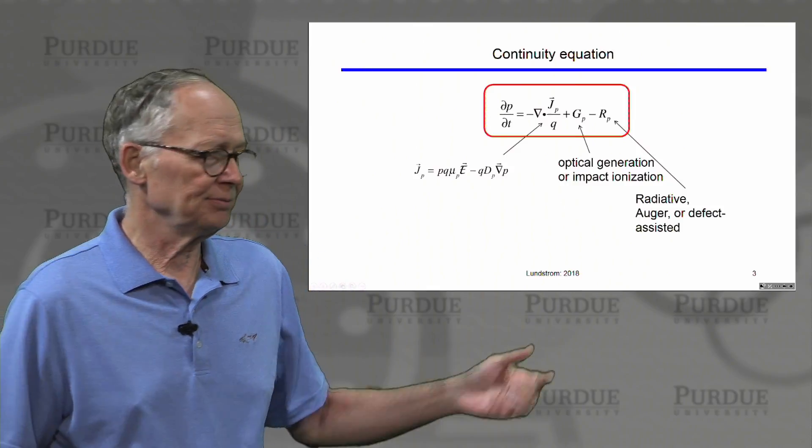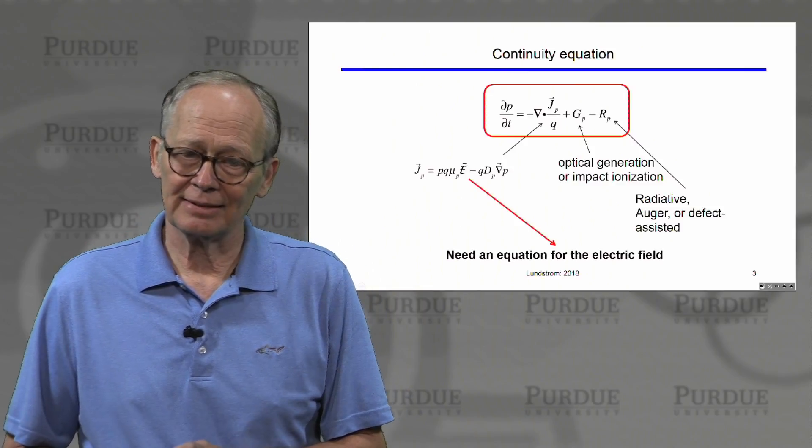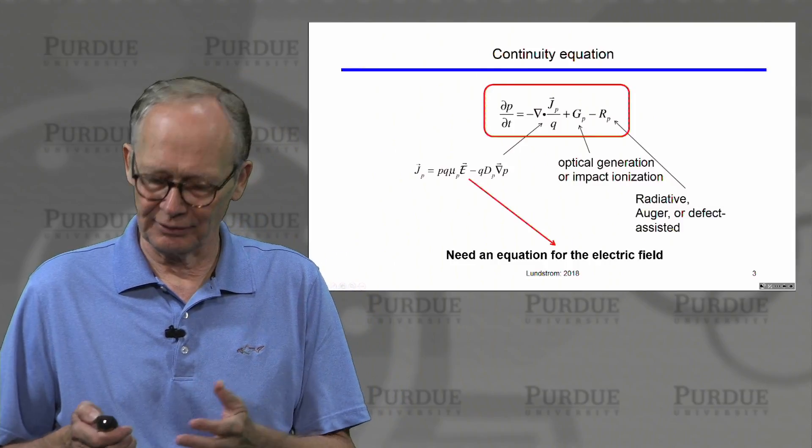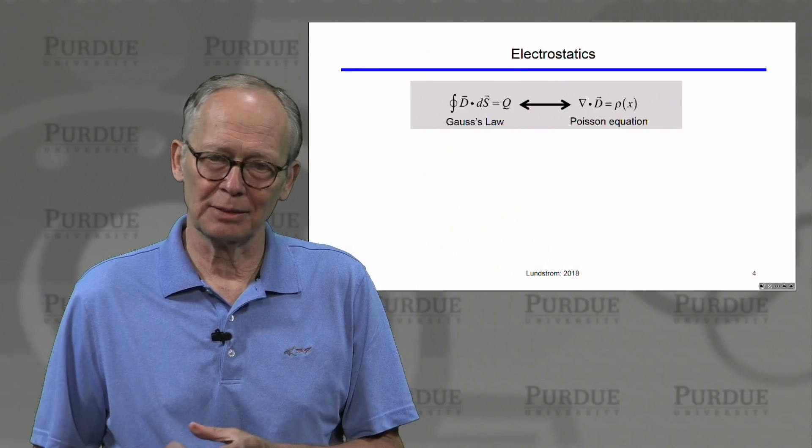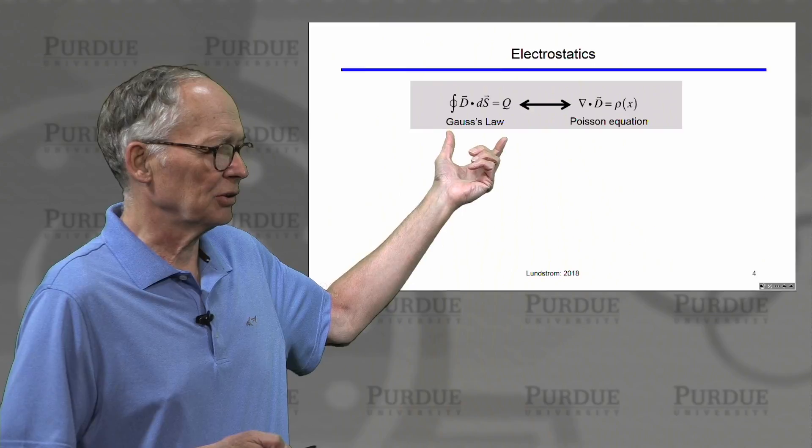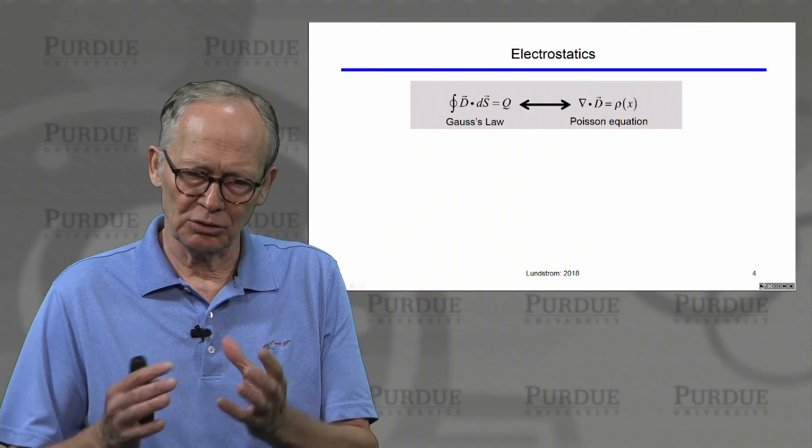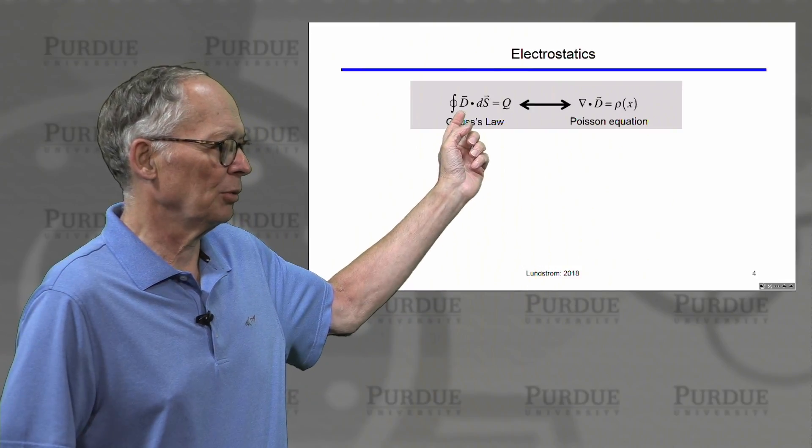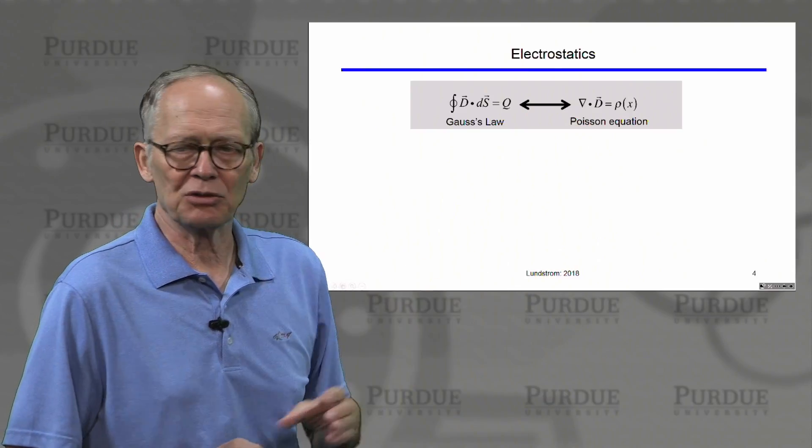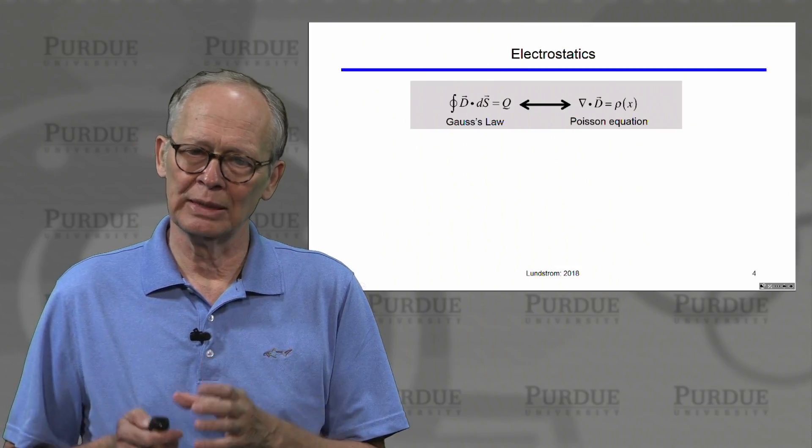The current equation, if we write it in drift diffusion form, has an electric field. That means there is an electrostatics problem. We also need an equation for the electric field. That's Gauss's law. We can express Gauss's law in integral form, relating the charge enclosed in a volume to the integral of the normal component of the displacement field across the surface. There is also a differential form: divergence D equals rho, the space charge density.